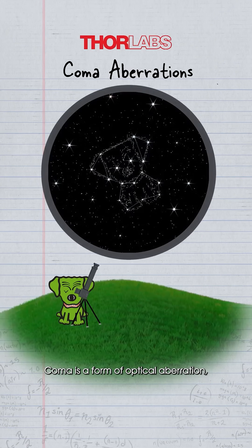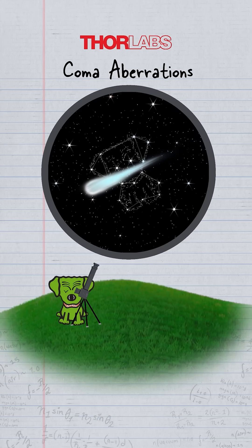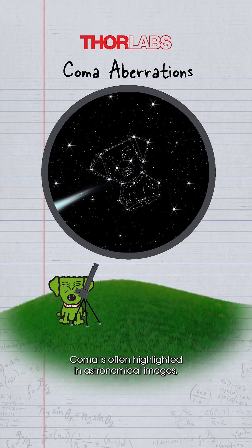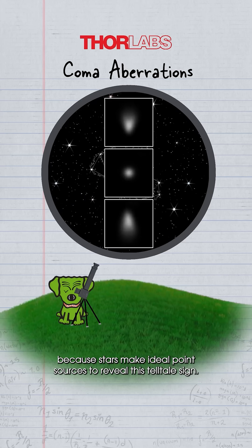Coma is a form of optical aberration getting its name from the comet-like tail it's best identified by. Coma is often highlighted in astronomical images, because stars make ideal point sources to reveal this telltale sign.